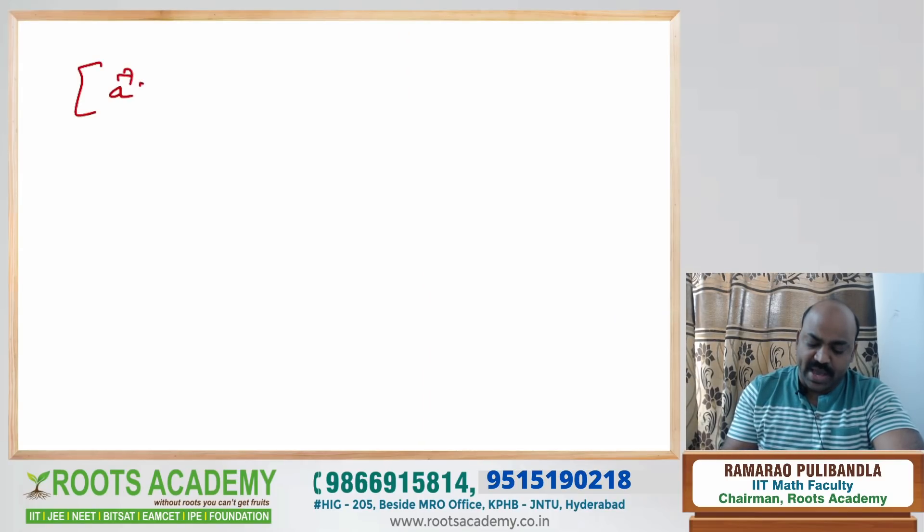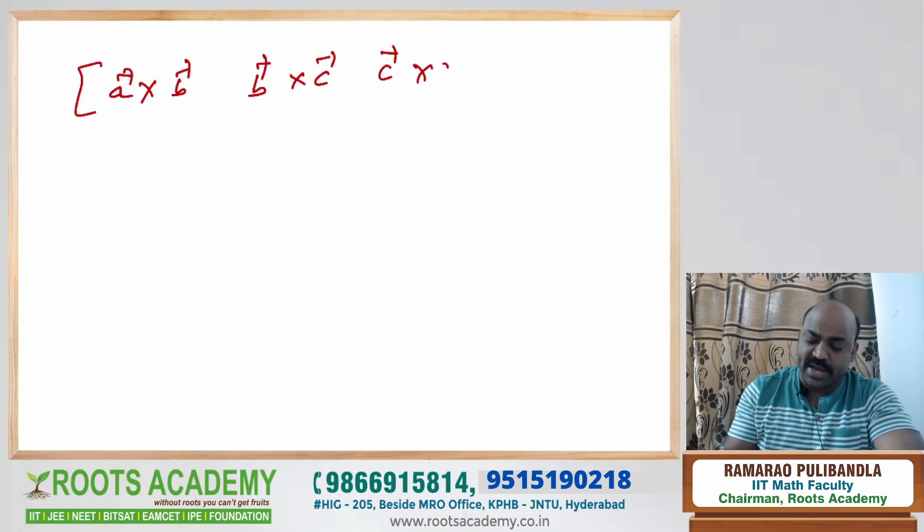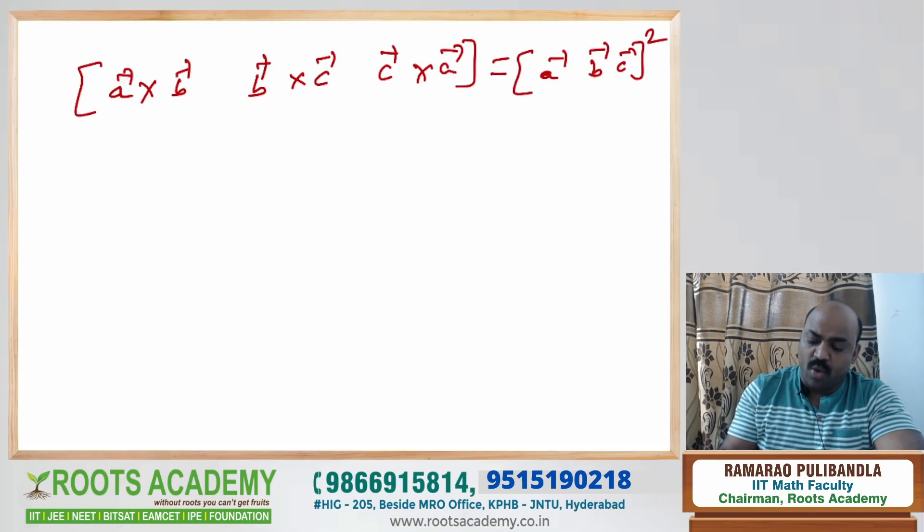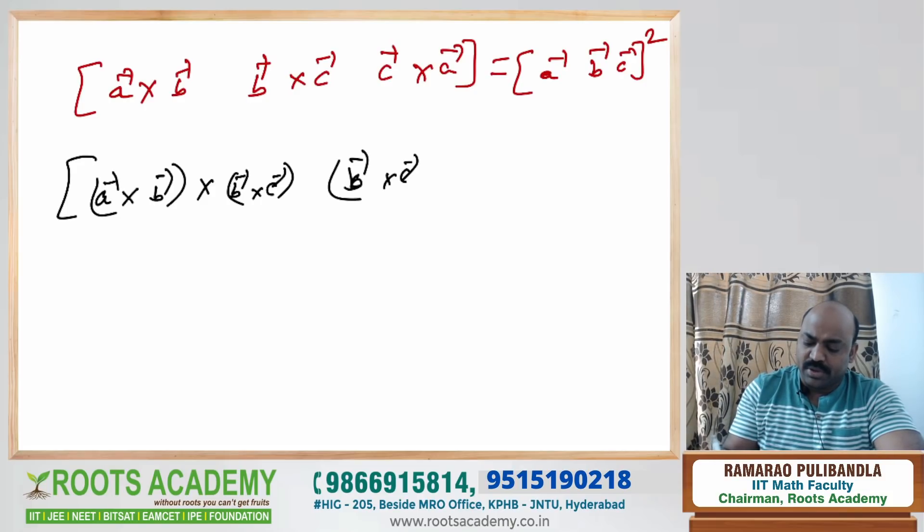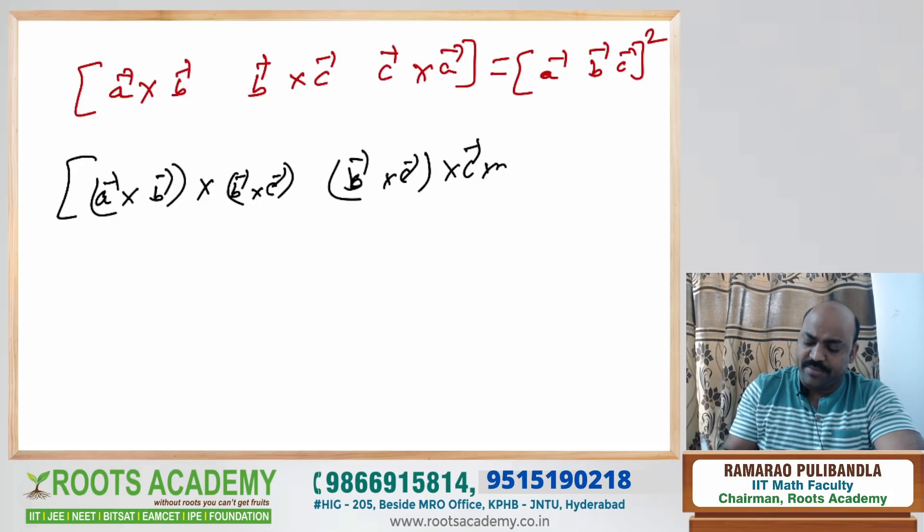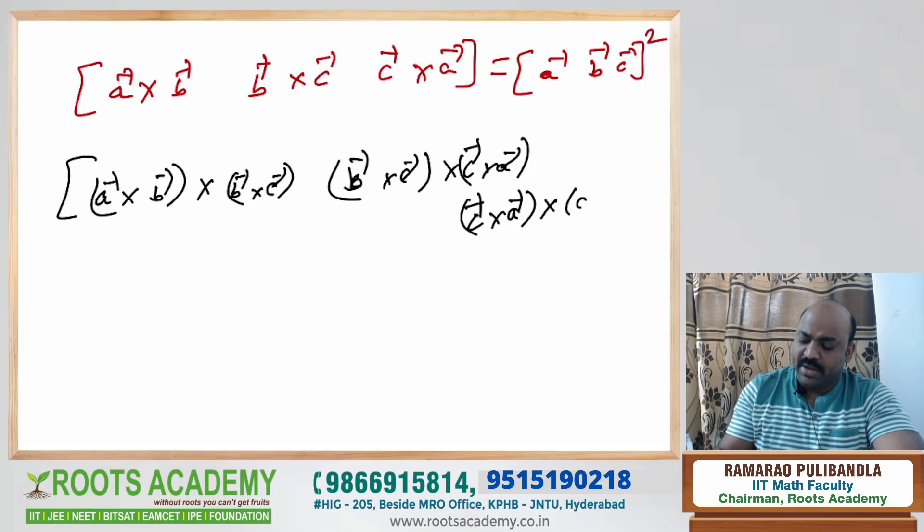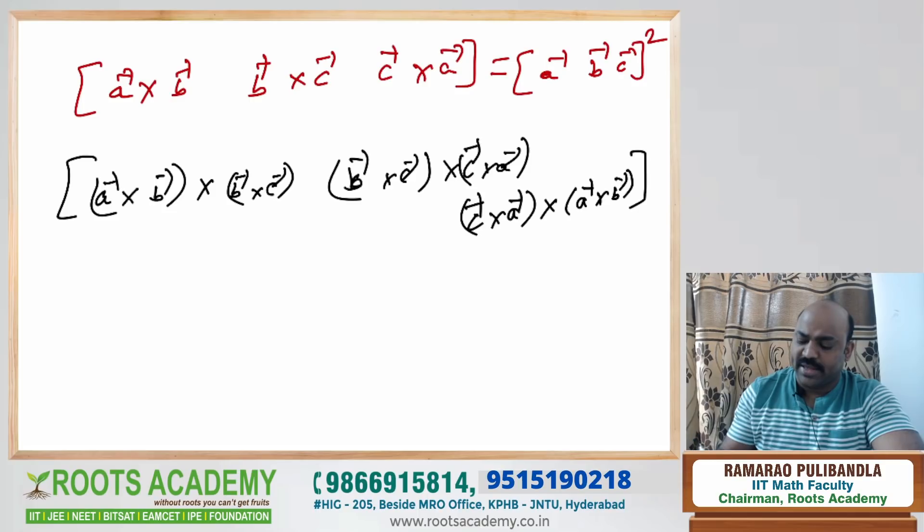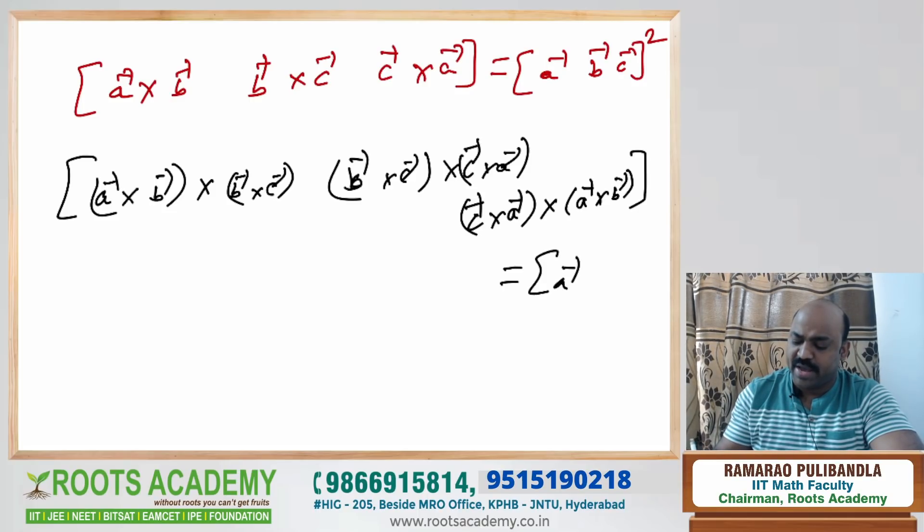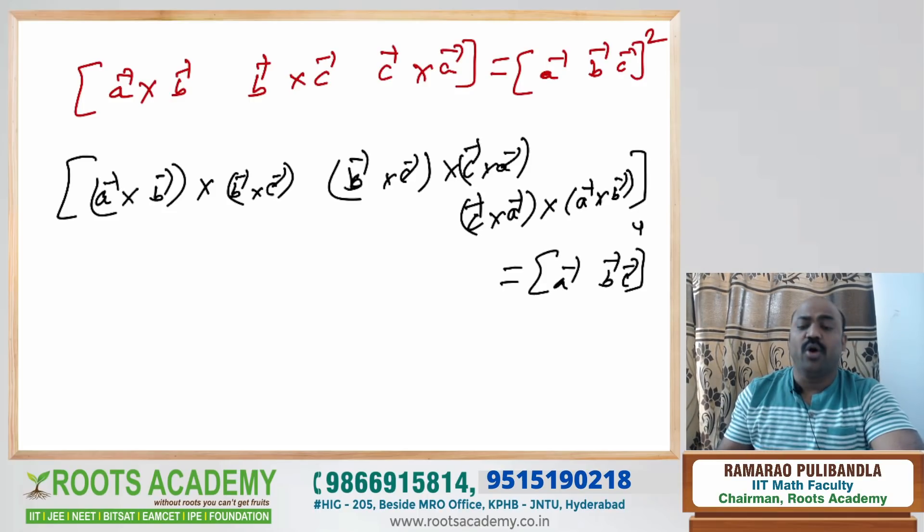And the next beautiful point here is, a cross b, b cross c and c cross a. And do you know which box is? Box abc whole square. One last beautiful point is, box of a cross b, b cross c and c cross a. Try to follow very carefully. This is box abc whole power 4, right? This is a beautiful concept connected to that question.